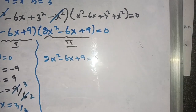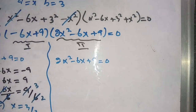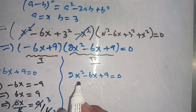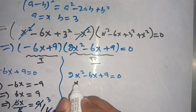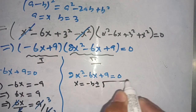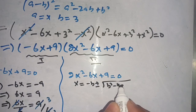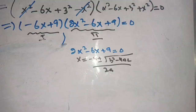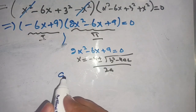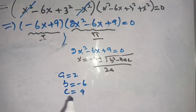Moving to the next equation: 2x squared minus 6x plus 9 equals 0. This is a quadratic equation. We use the quadratic formula: x equals minus b plus or minus square root of (b squared minus 4ac), divided by 2a. Here, a equals 2, b equals minus 6, and c equals 9.